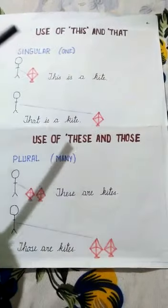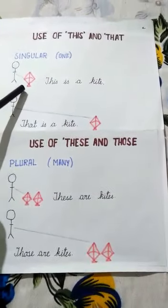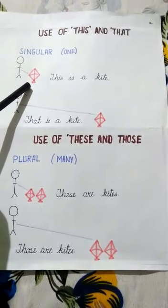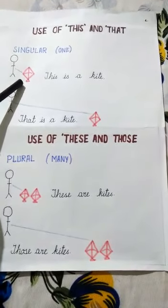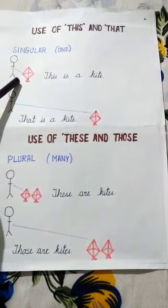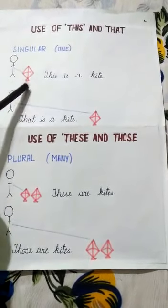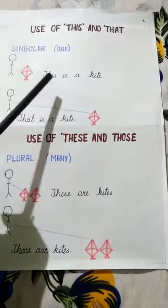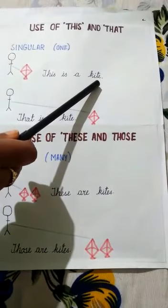This is used to talk about people, animals, places and things that are close to us and one in number. For example, this is a kite.